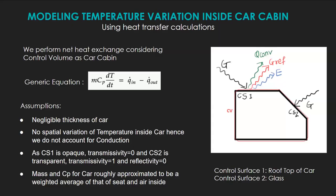For modelling the temperature variation inside the car cabin, we now use heat transfer calculations. Our governing equation is mCp dT/dt is equal to q dot in minus q dot out. And this is our control volume. There are two control surfaces here. Control surface 1 is the rooftop of the car and control surface 2 is glass. Here, all the losses and also the incident sunlight has been shown.